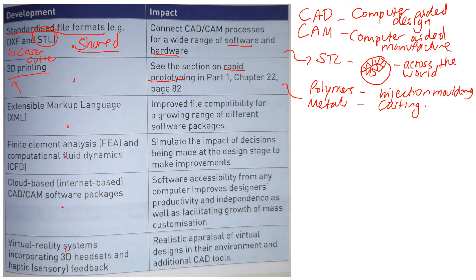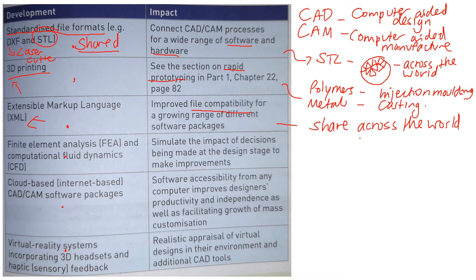Another advancement is extensible markup language (XML). This means there is much improved compatibility between different types of software packages, making it easier to share files across the world and between lots of different pieces of software — making them more accessible and easier to use.